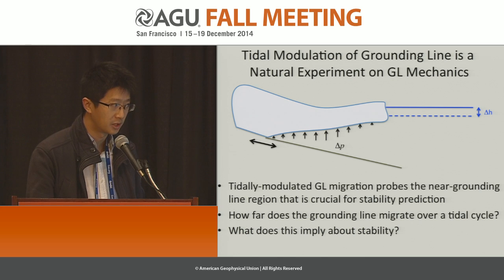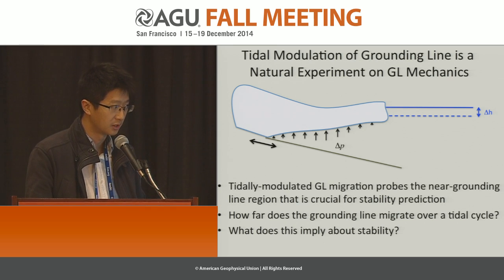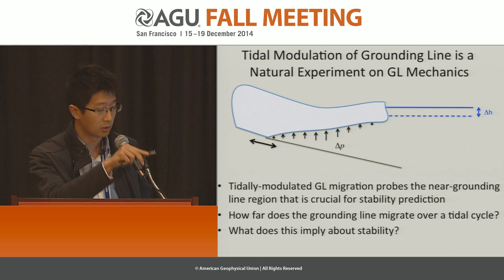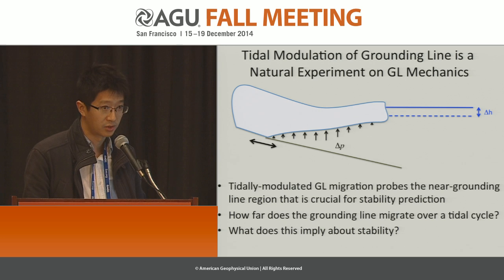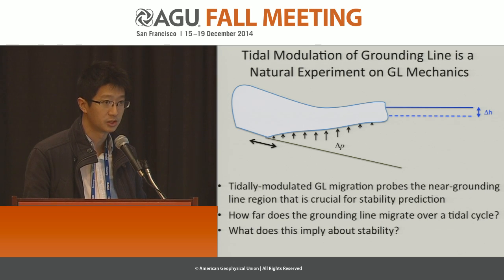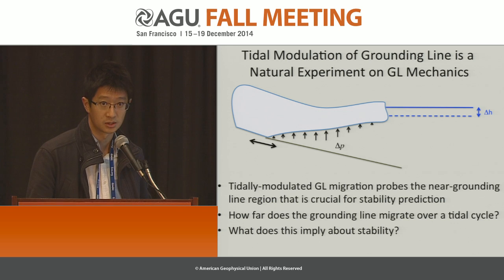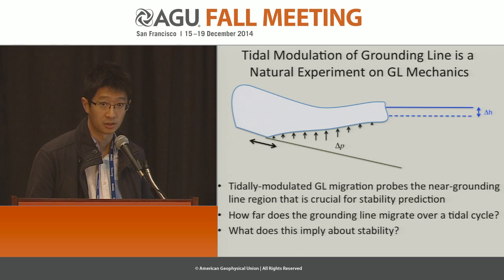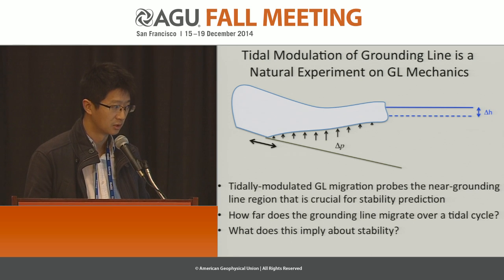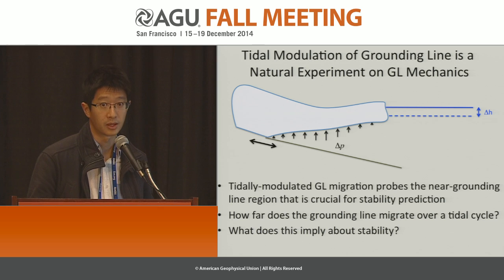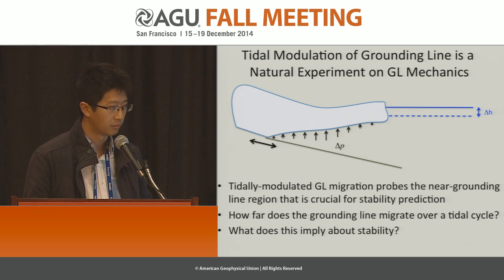Why are we looking at tidal modulation? Tidal modulation is basically a natural experiment that tells you something interesting about the grounding line. We have this forcing over a tidal cycle when the tide goes up and down and the grounding line migrates back and forth. In this presentation, I'm going to try to answer two fairly simple questions: first, how far does the grounding line migrate over a tidal cycle? And second, what does this imply about ice sheet stability — does it give us information about bed slopes or things that relate to ice sheet stability?